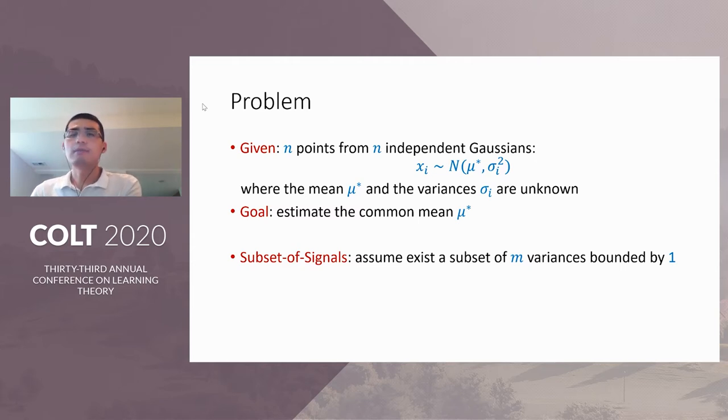Of course, we need some assumptions on the variances of the Gaussians, and there can be many different kinds of assumptions. Here, we consider one particular kind of assumption we call a subset of signals. In this model, we assume there is a subset of M variances bounded by one. And we don't have assumptions on the variance of the Gaussians outside the subset. And we don't know which Gaussians belong to this good subset, we only know the existence of this good subset.